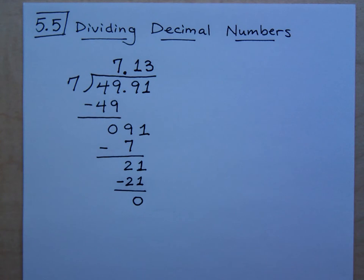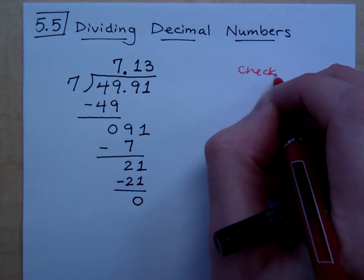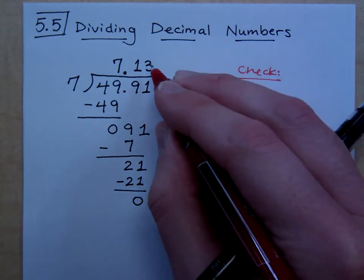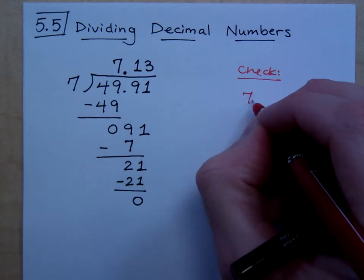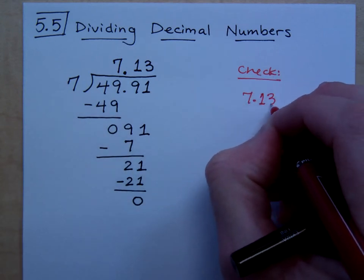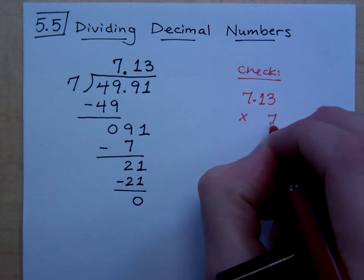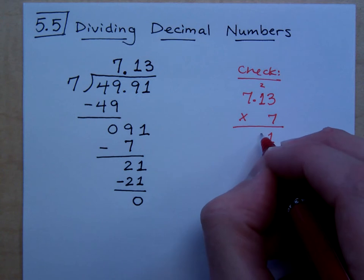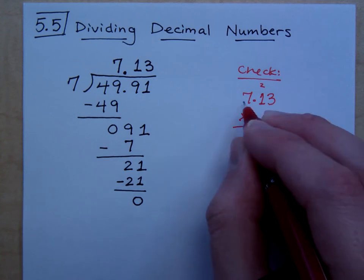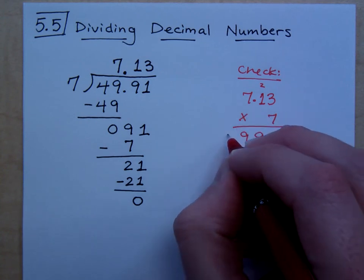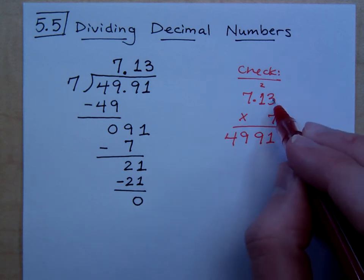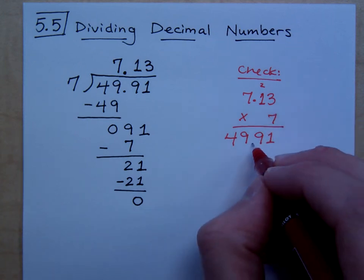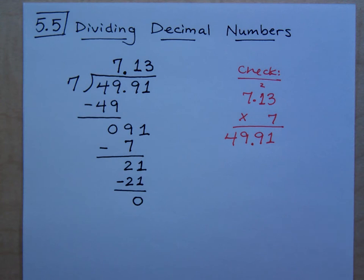How can we check our work? 7.13 times 7, right? We can check this by multiplying the quotient times the divisor. So 7.13 times 7. So 7 times 3 is 21, then we get a 9. 7 times 7 is 49. I have two decimal places here, none here. So all together, two decimal places, so everything checks out.